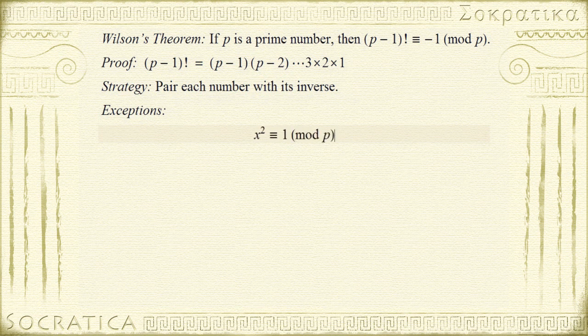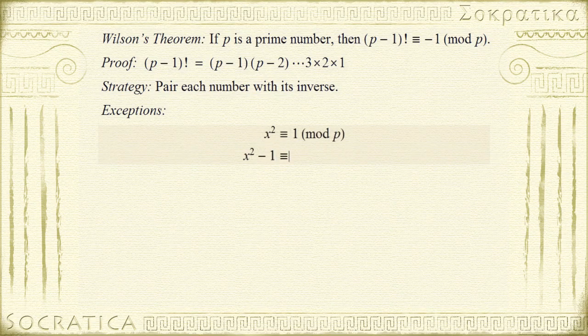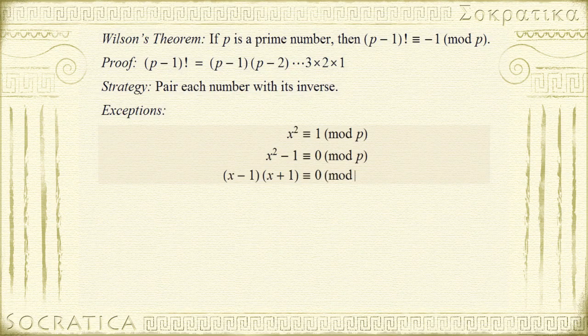Because x times itself, x squared, gives you 1. Now we can solve this congruence. Let's just subtract 1 from both sides. That gives us x squared minus 1 is congruent to 0 mod p. Now we factor. That gives us x minus 1 times x plus 1 is congruent to 0 mod p.